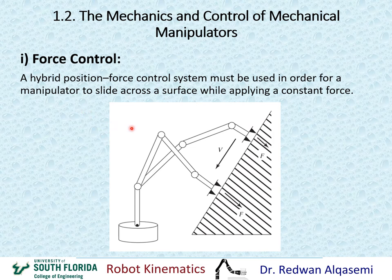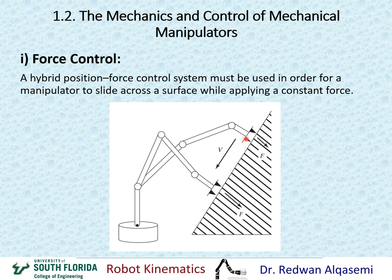If we want force control, we use something called a hybrid position-force control system, where the robot arm can move along a surface while simultaneously applying a constant force so it does not detach from the surface. That constant force combined with the motion along the surface means you are not specifying the exact trajectory — you're having the robot follow the surface and apply that force. This is called force control, and it's a hybrid between position and force supplied to the robot.